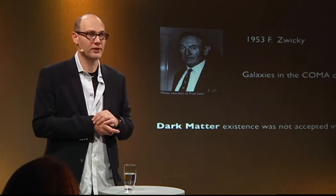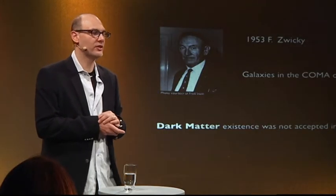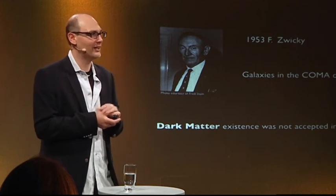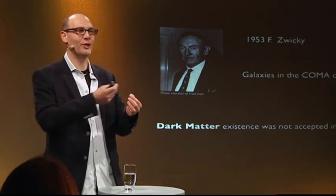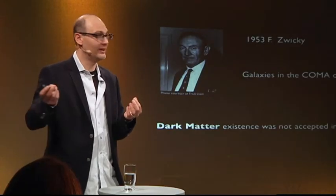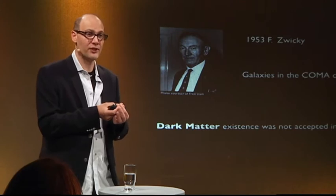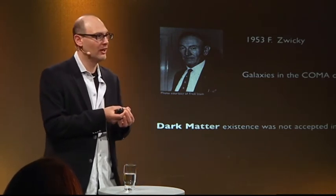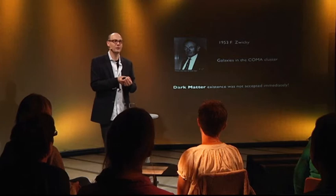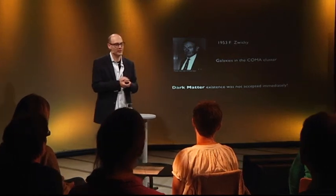The dark matter existence was not accepted immediately. It took many, many decades, because at that time we did not have precision cosmology, and therefore it was dubious to immediately accept the existence of dark matter. Only recently, Vera Rubin and collaborators looked at the rotation of the galaxy — the beautiful arms of the galaxy going around their own center. They realized that the only way you could account for the velocity of the arms away from the center was to assume there was some other stuff, or to modify gravity at large distances. Nowadays, the theory that we need dark matter seems more accredited.